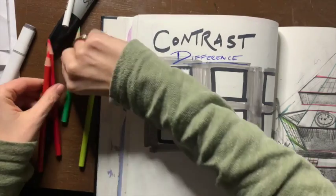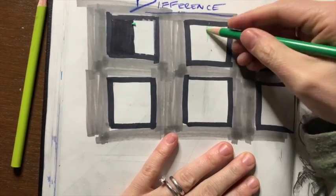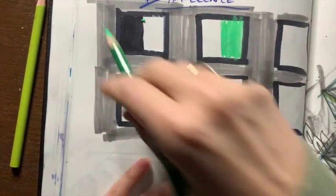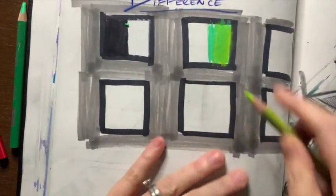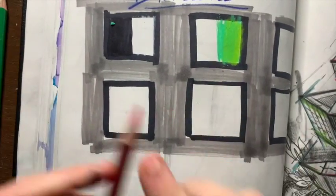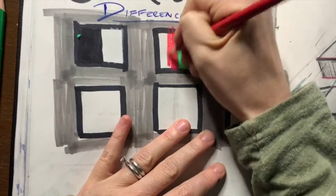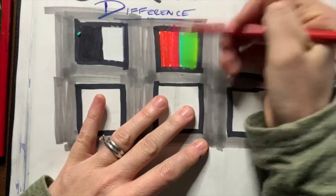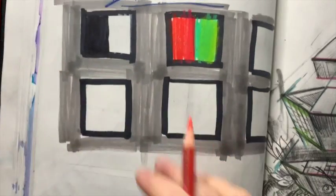Another example would be the complements of red and green. If I shade this really dark — I've got green. Maybe I want to add another value of green to play around and blend. You have mostly green on one side, and the opposite that's going to create the strongest color contrast is red. Red versus green — wow, what a difference between those two!